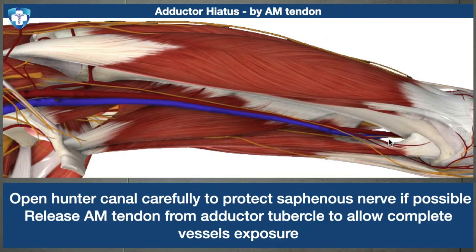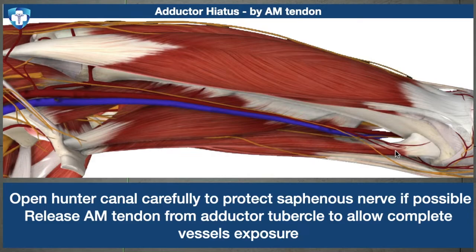We need to release the adductor hiatus to protect the vessels. We place a right-angle forcep here and release the adductor magnus tendon. However, we must be oncologically safe — we stay away from the tumor while releasing the tendon. We have now separated the vessels down to the knee level.